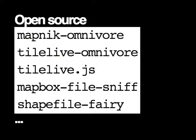Node Mapnik and Node GDAL enable us to do automatic detection, but also allow us to render tiles fast and accurately and support more formats. GDAL supports over 200 formats, which opens the door for how many formats we can support in the future, and we're slowly opening these up.